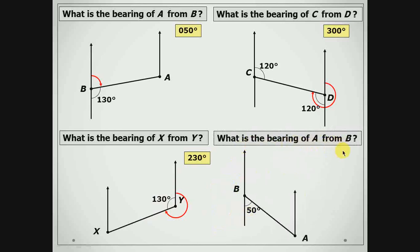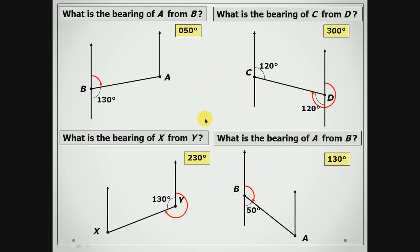What is the bearing of A from B? This time we are leaving from B, so from our north line we are measuring in a clockwise direction. We can identify that this is angles on a straight line, which measures 180 degrees. So if here is 50 degrees, then this will be 180 minus 50 degrees, which is 130 degrees. Once we can identify where we are actually leaving from and remember that we are always measuring clockwise, using our knowledge of alternate angles and angles on a straight line makes it easier to identify the bearings.